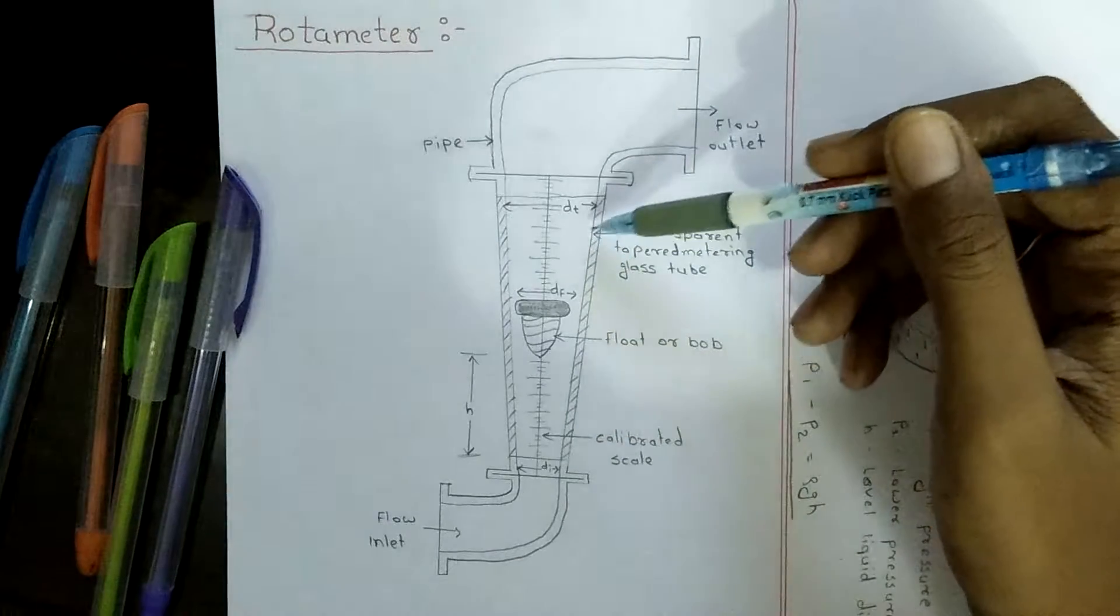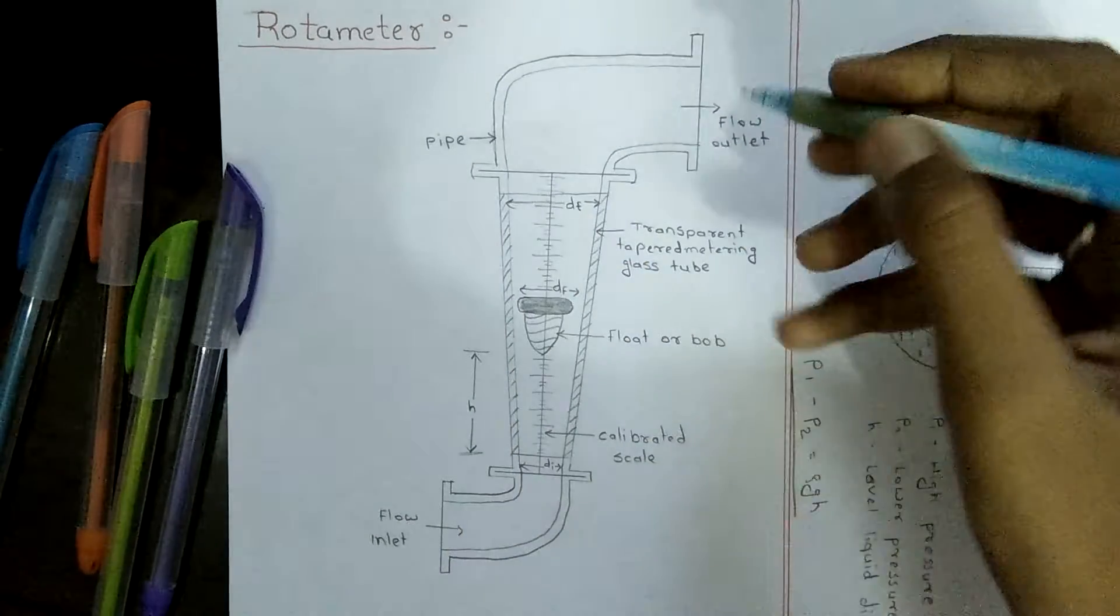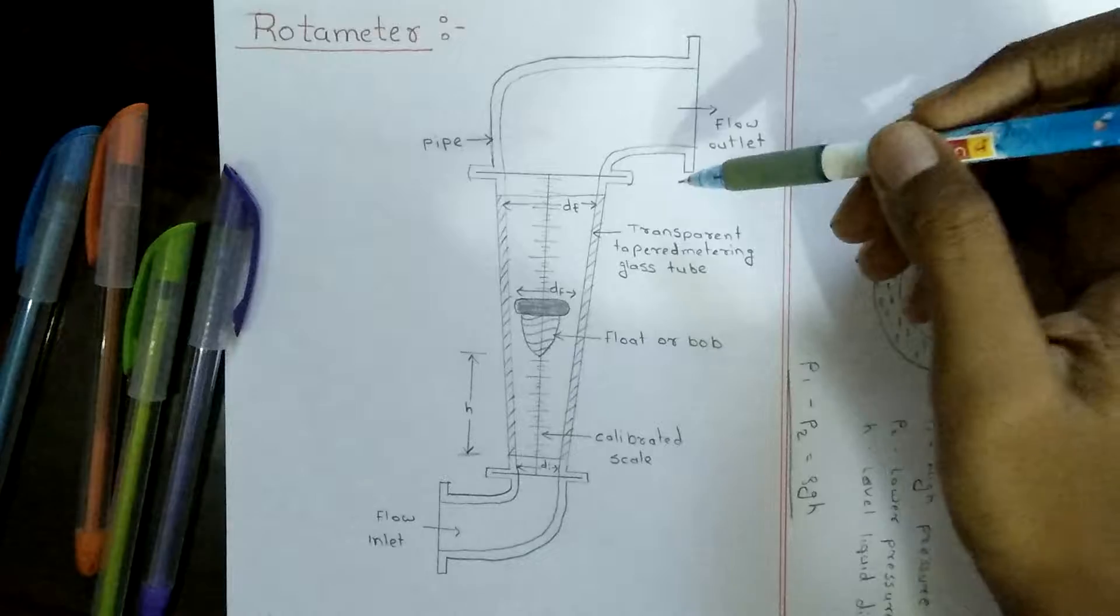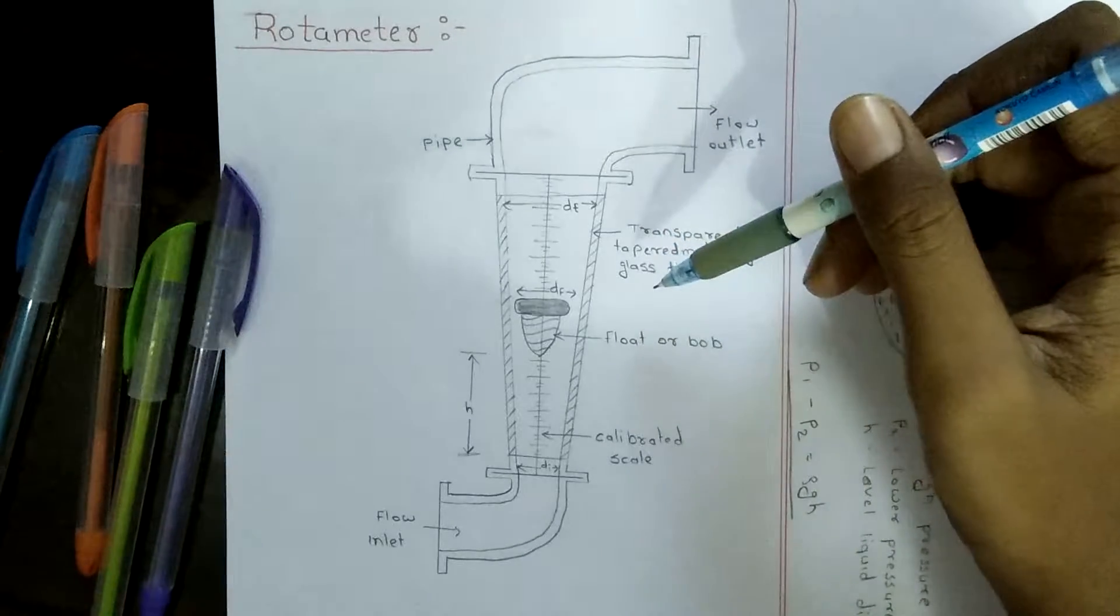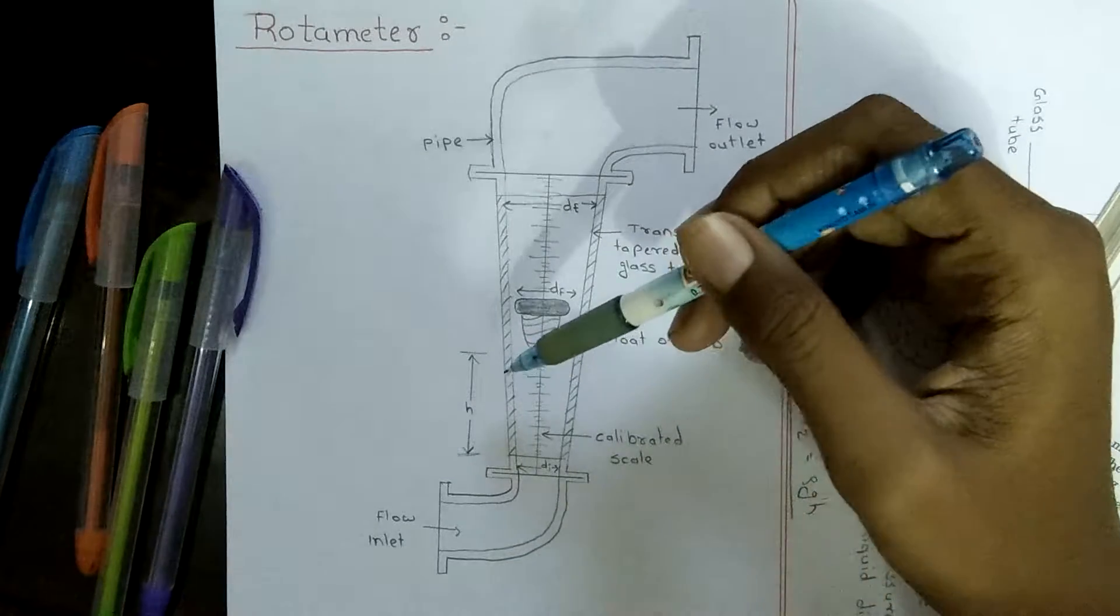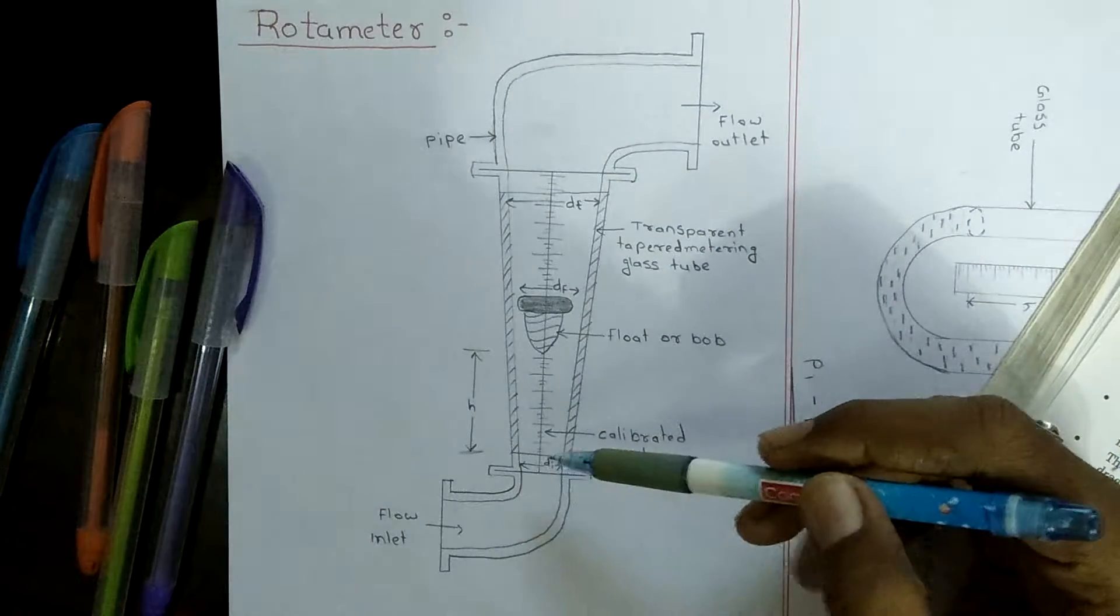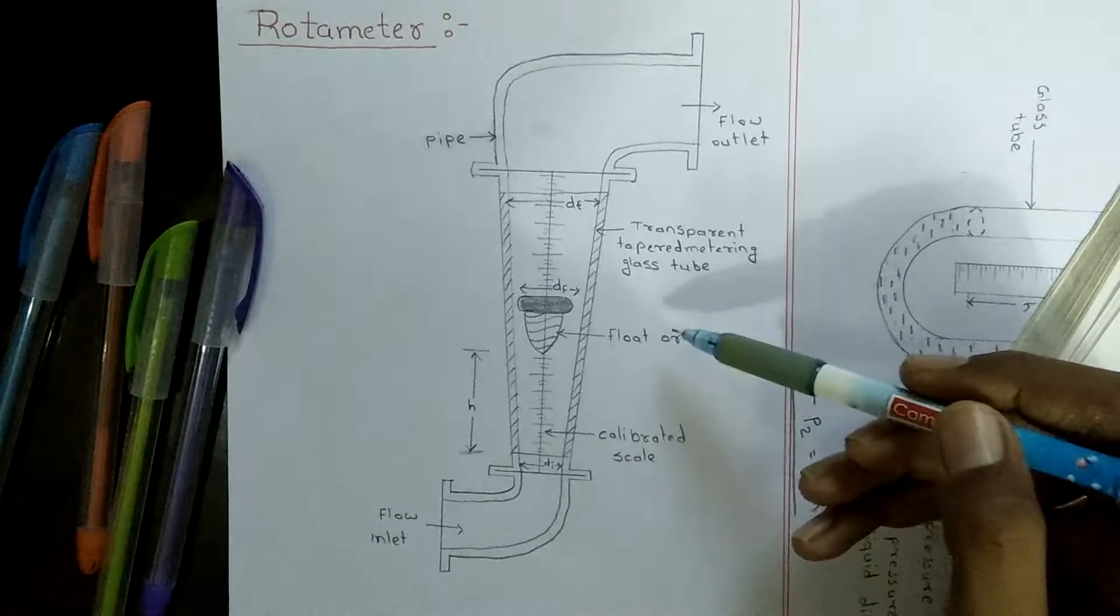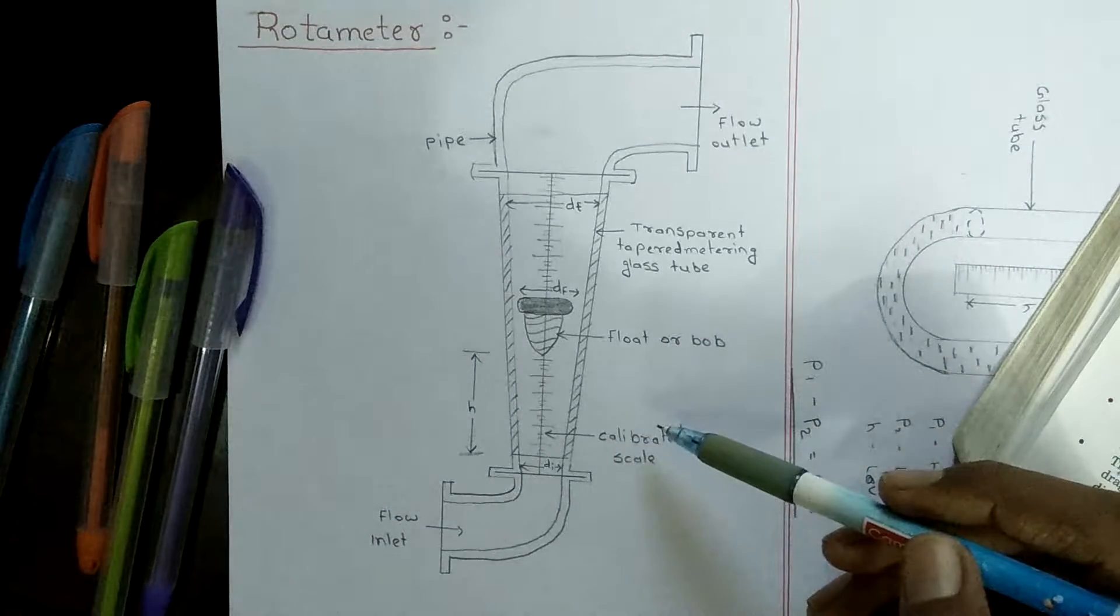The flow to be measured enters the tube from the bottom side. Inside the tube there is a float or bob with grooves on the body which has higher density than the fluid.